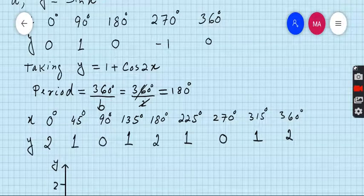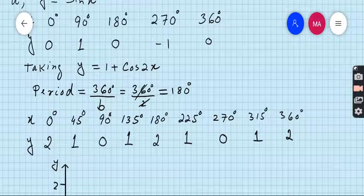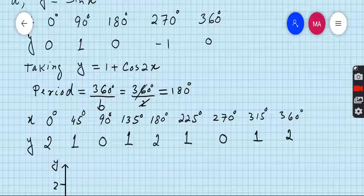Use your scientific calculator. Write 1 + cos(2 × x) and evaluate: for x = 0, y = 2; for x = 45, y = 1; for x = 90, y = 0; for x = 135, y = 1; for x = 180, y = 2; for x = 225, y = 1; for x = 270, y = 0; for x = 315, y = 1; for x = 360, y = 2.